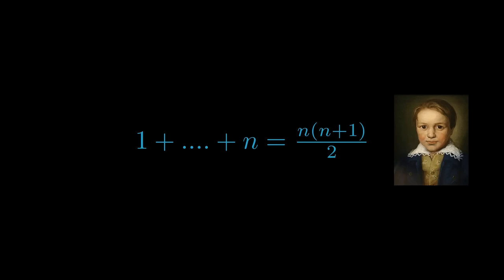This method can be generalized for any natural number n, and we can prove by induction the following formula. Adding 1 to n and multiplying by the number of pairs, which is half n, equals the sum of all the numbers from 1 to n. Note that n times n plus 1 will always be divisible by 2, as either n or n plus 1 must be even.